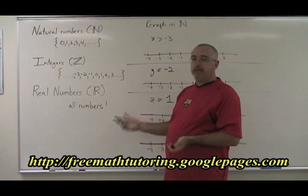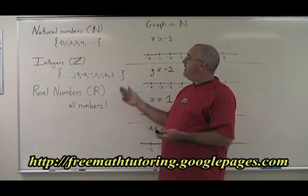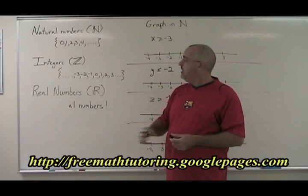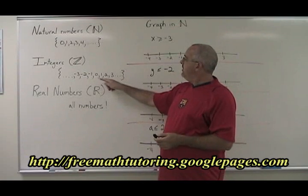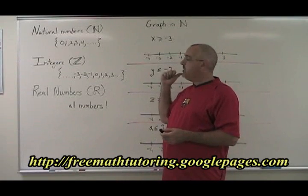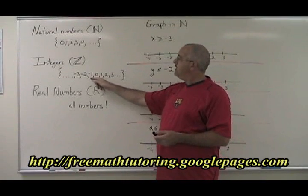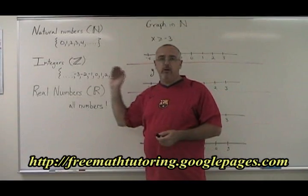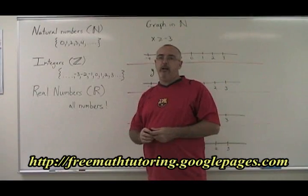Integers is very similar, but it includes the negative numbers too. Zero, one, two, three going on forever in the positive direction. Also negative one, negative two, negative three going on forever in the negative direction.